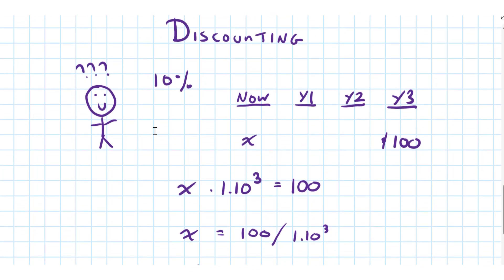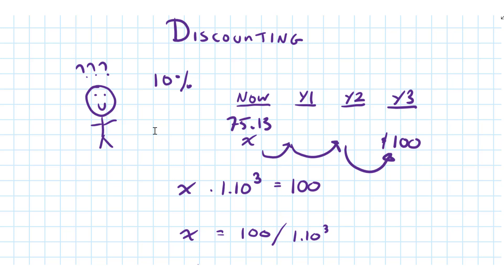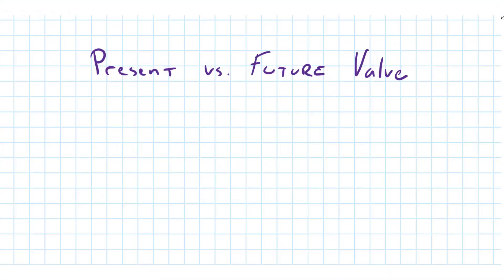x equals $75.13. So if I would like $100 in the bank at the end of year three, today I deposit $75.13, and after three years of compounding at 10% it will reach $100. That idea is called the present value.